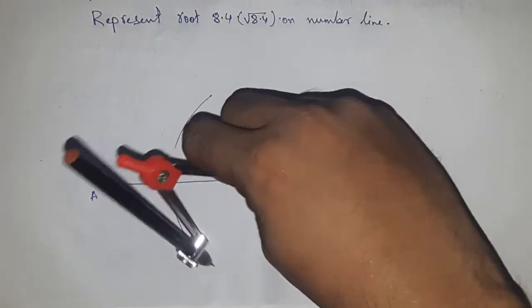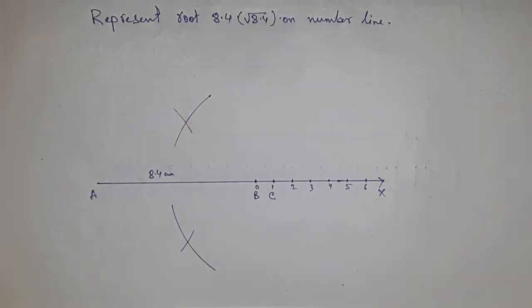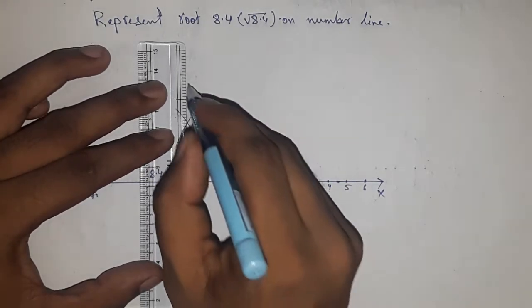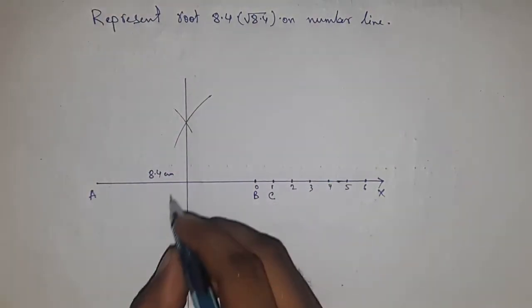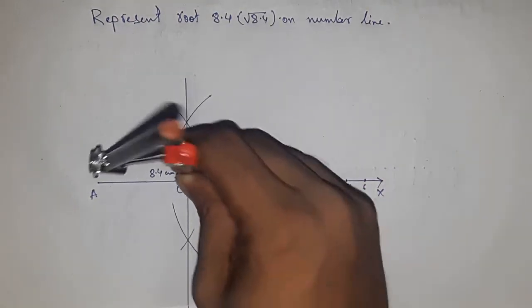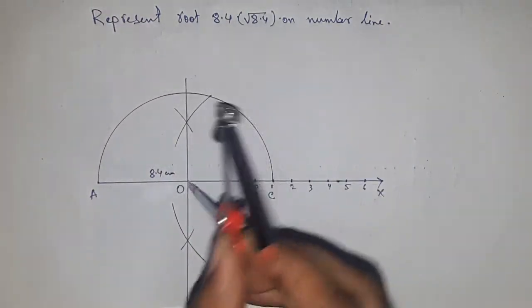Taking greater than half of AC and drawing arcs with the same length, putting the compass here and cutting the AX. Next, joining this, which meets at a point O. Now, taking the distance OA and OC to draw a semicircle.